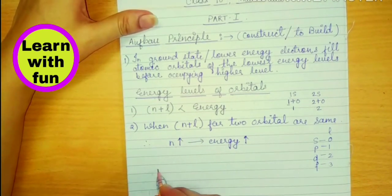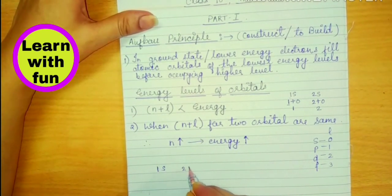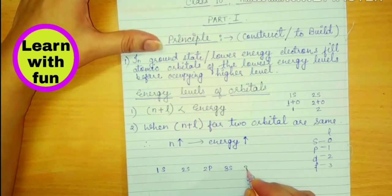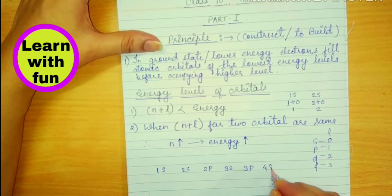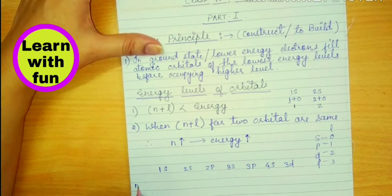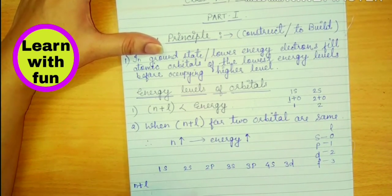So let's now see how electrons fill in 1s, 2s, 2p, 3s, 3p, 4s, 3d. Let's take these. We will calculate N plus L value.